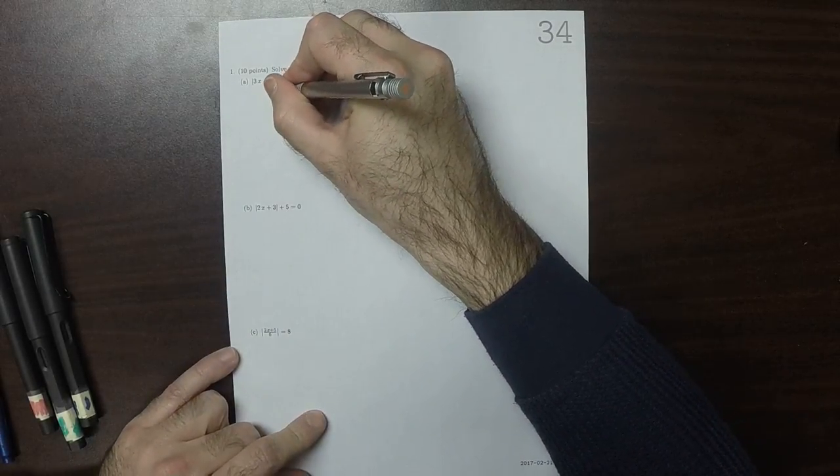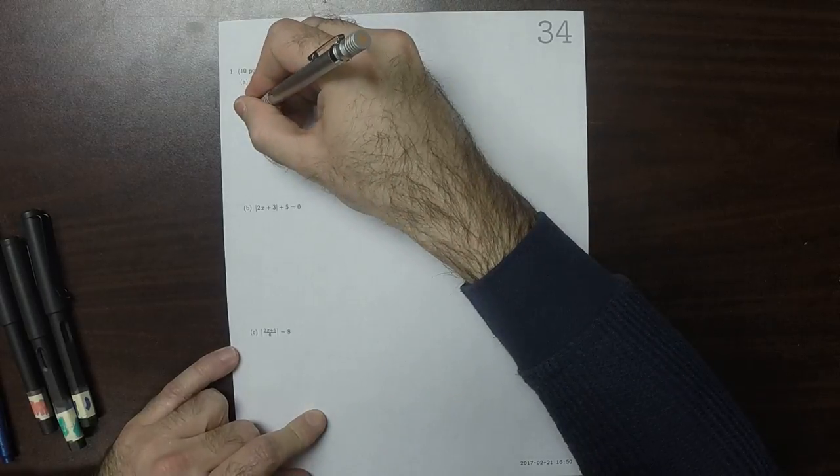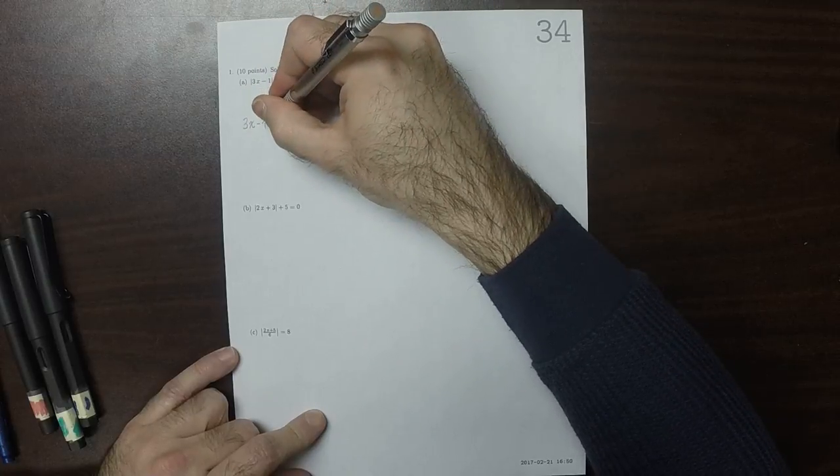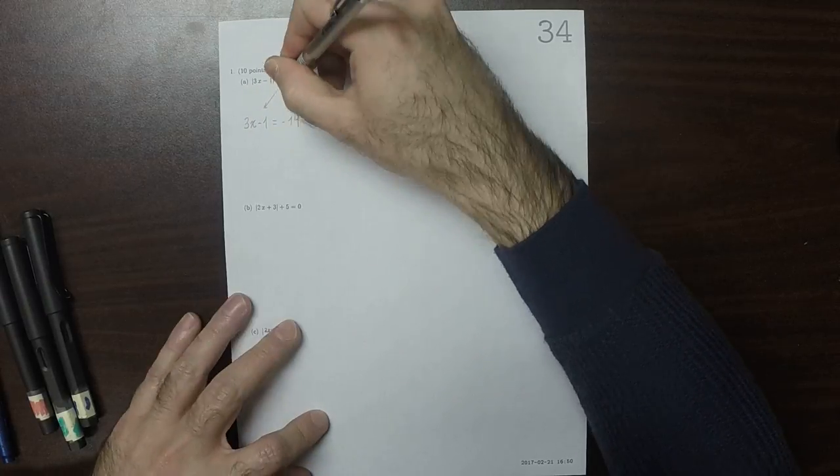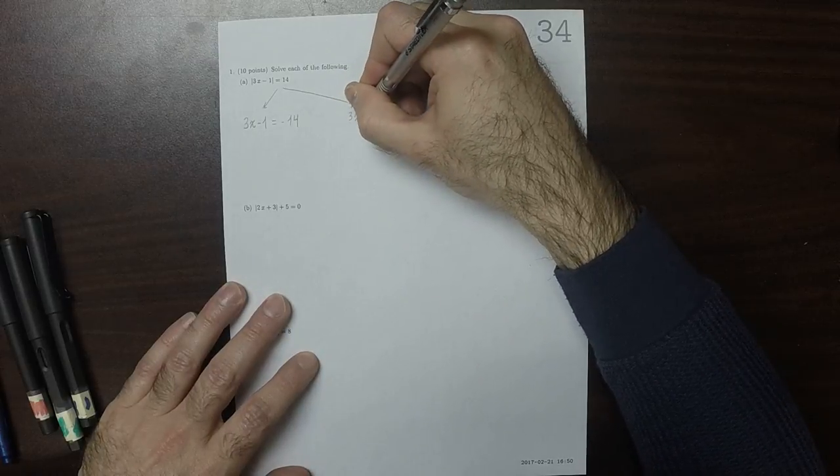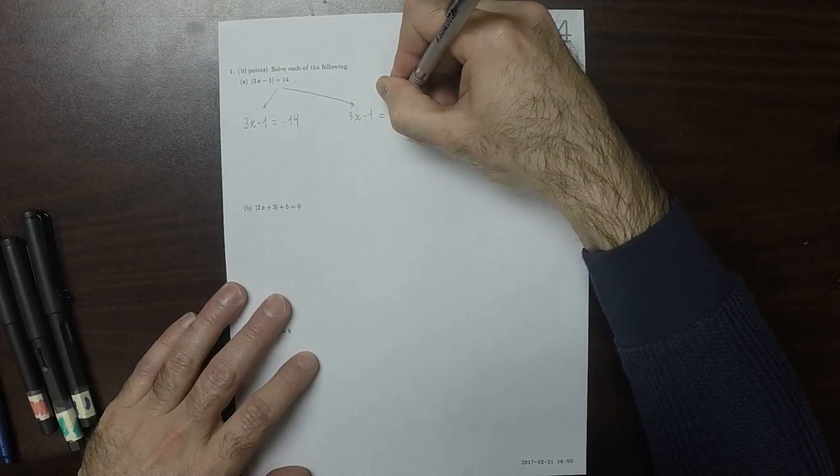It is either the case that 3x minus 1 is negative 14, or that 3x minus 1 is positive 14.